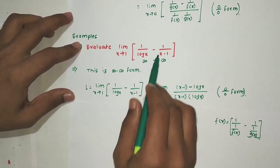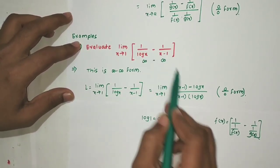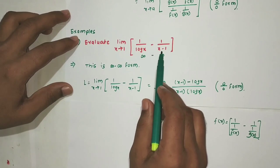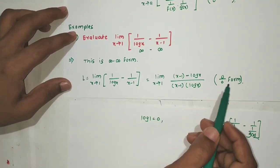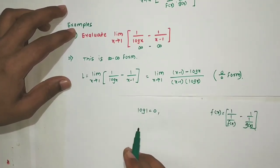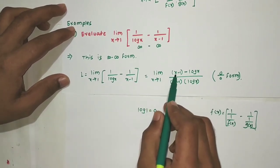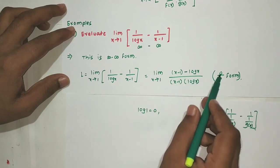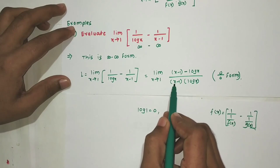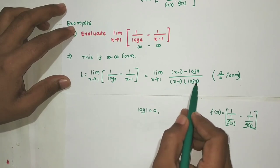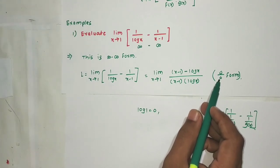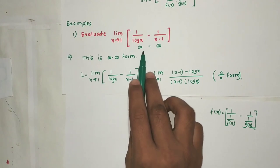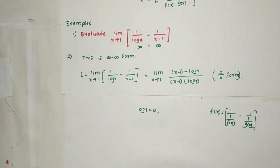After cross multiplication, the expression becomes [(x-1) - ln(x)] / [(x-1)·ln(x)]. When x=1: numerator gives 1-1=0, and ln(1)=0, so numerator is 0. Denominator: (1-1)·ln(1) = 0·0 = 0. So this is 0/0 form — we have successfully converted infinity minus infinity to 0/0 form.